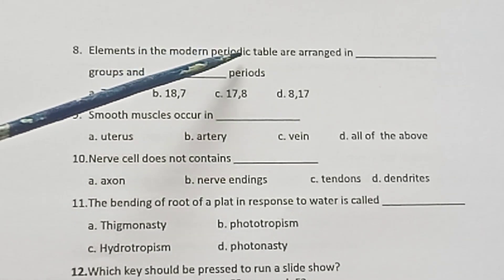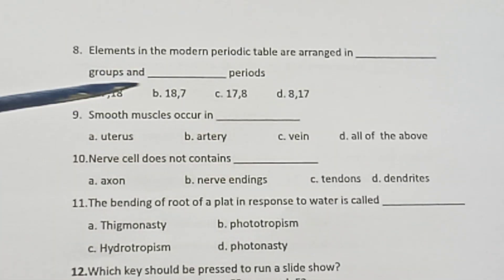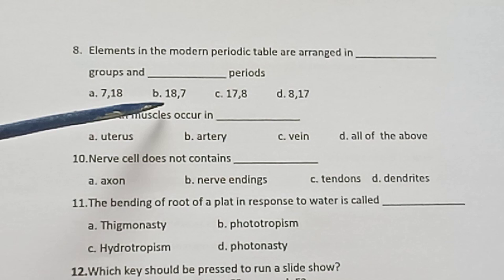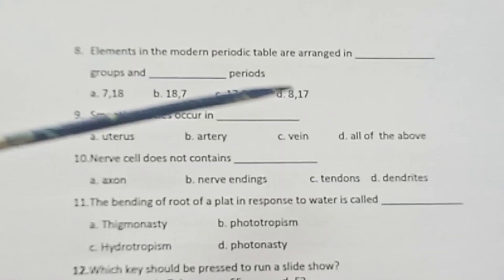Question 8: Elements in the modern periodic table are arranged in groups and periods. A. 7,18, B. 18,7, C. 17,8, D. 8,17.